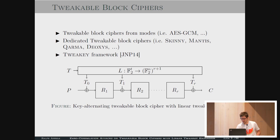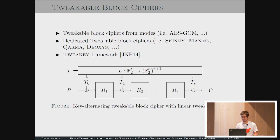How can we construct tweakable block ciphers? We can construct them by using modes, for example AES-GCM. But there are also some dedicated tweakable block ciphers, like Skinny, Mantis, Karma, and Deoxys. Most of them are built with the tweak key framework introduced in 2014. Basically, it's a key-alternating block cipher, but we also have a tweak schedule where we update the tweaks.